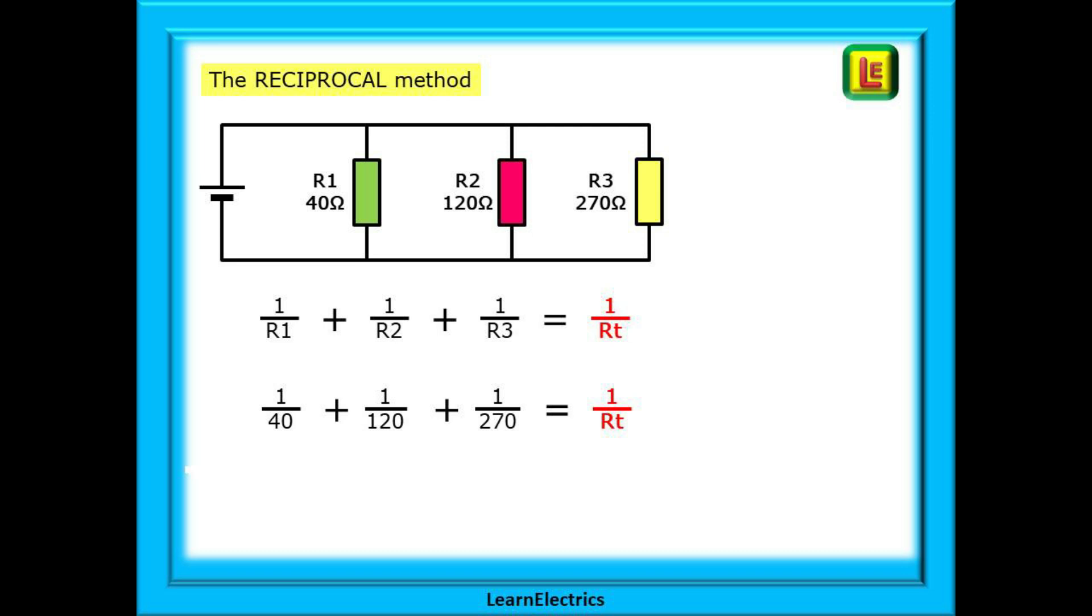We can show the calculation like this. Put in the resistor values, and now we are ready to start calculating. My recommendation is to write down each value as you calculate it. Be methodical and neat. That way you will only need to do the calculation once.